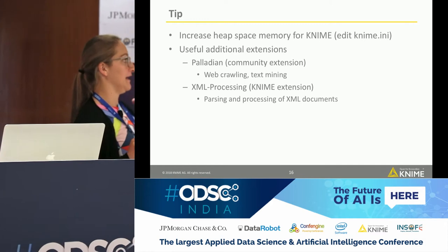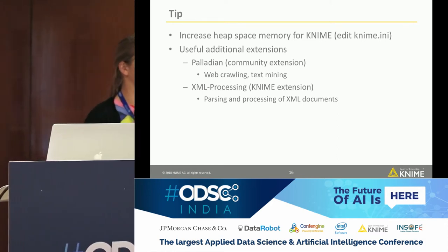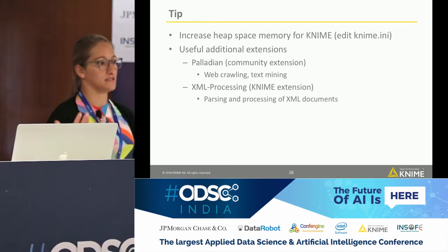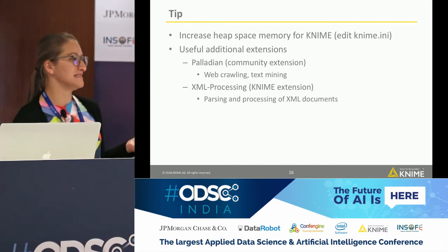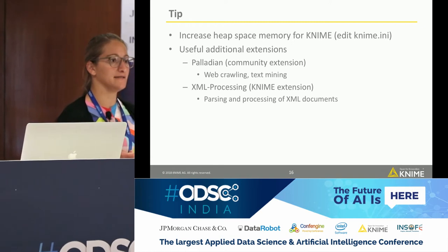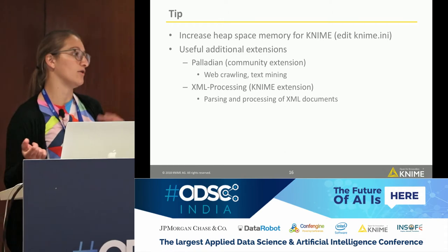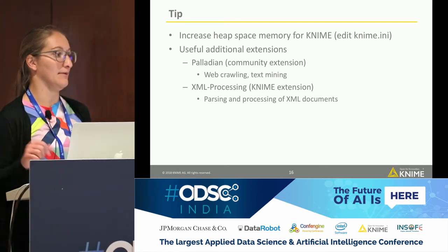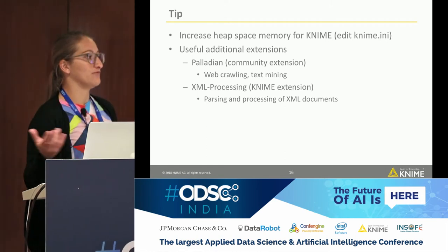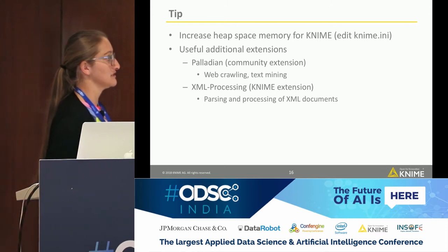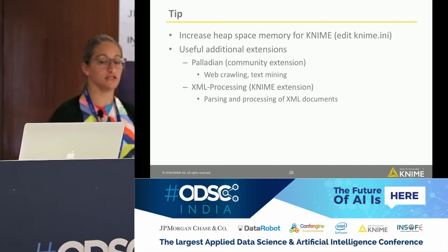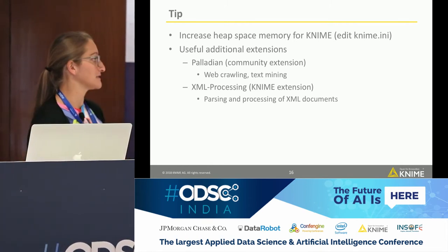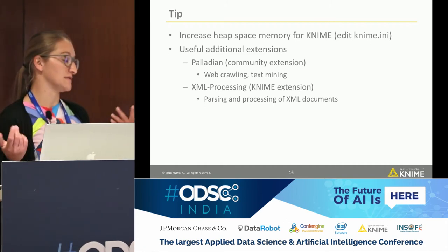Two tips for using text mining inside KNIME: KNIME is based on Java and Eclipse, and you define how much heap to give the Java virtual machine. The default is two to four gigabytes, which may not be enough for text analysis. You can go into the KNIME.ini file and increase it — I normally use about eight gigabytes of heap for text mining. Another useful extension is the Palladian community extension, which is good for web crawling and text mining, and the XML processing extension for parsing XML documents.